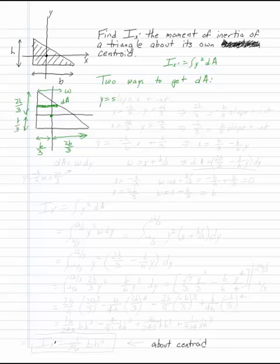So if we say that y is some slope times x plus an intercept, we have two points. We have x equals minus b over 3, y equals 2h over 3, and we have x equals 2b over 3, and y equals minus h over 3.